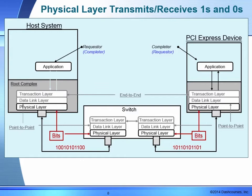At the physical layer, packets are turned into logical ones and zeros using the differential signaling scheme, and sent across the lanes which constitute a link to the other connection on the other side of the link.